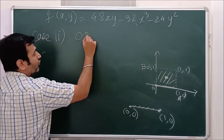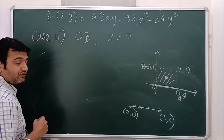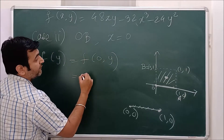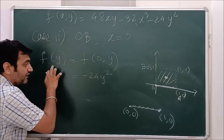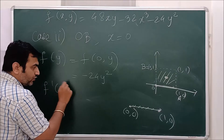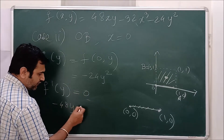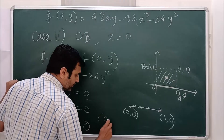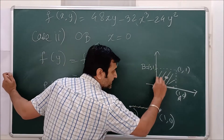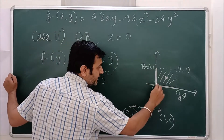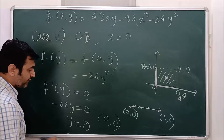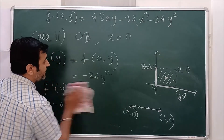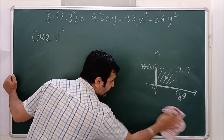On segment OB (along the y-axis, x = 0): f reduces to −24y², a function of y. Setting the derivative −48y = 0 gives y = 0, but (0, 0) is again a boundary point of this segment, so no interior critical points are found on OB either.